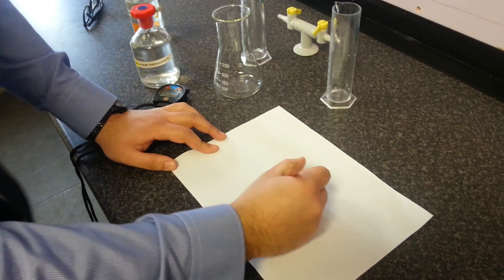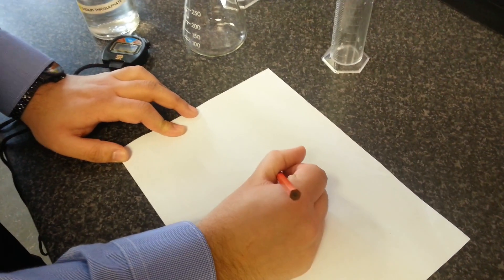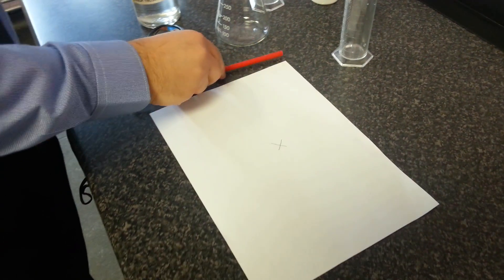So first what you're going to do is draw a cross on a plain white piece of paper like so. It's a nice faint cross using pencil.